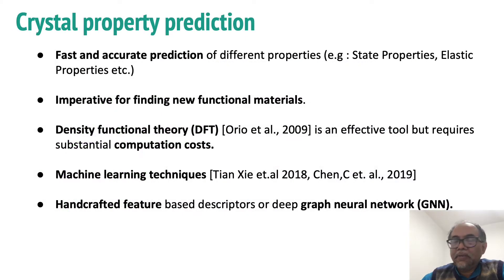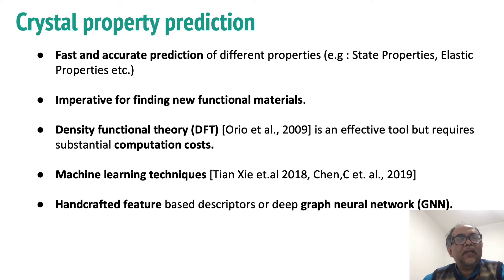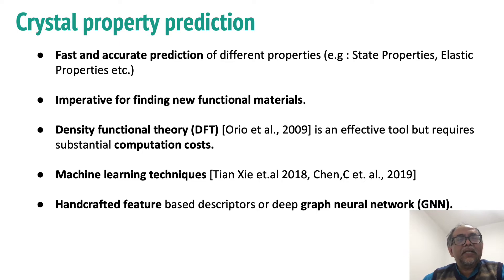Crystal property prediction — fast and accurate prediction of different properties such as state and elastic properties — is a challenging task of great interest to the materials science community, as it is a first step for finding new functional materials. Density functional theory (DFT) is widely used to estimate chemical properties but requires substantial computational cost. Several machine learning techniques have been proposed to enable fast and accurate prediction, facilitating rapid screening over large material search spaces.